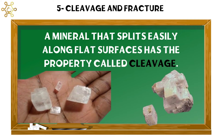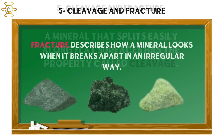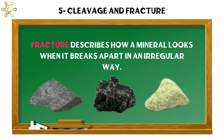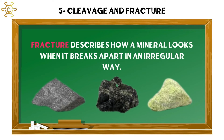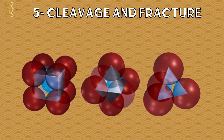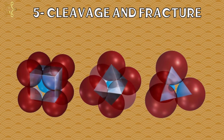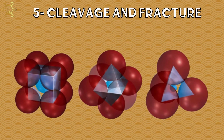Number 5: Cleavage and fracture. A mineral that splits easily along flat surfaces has the property called cleavage. Fracture describes how a mineral looks when it breaks apart in an irregular way. Cleavage and fracture depend on how the atoms in its crystals are arranged.